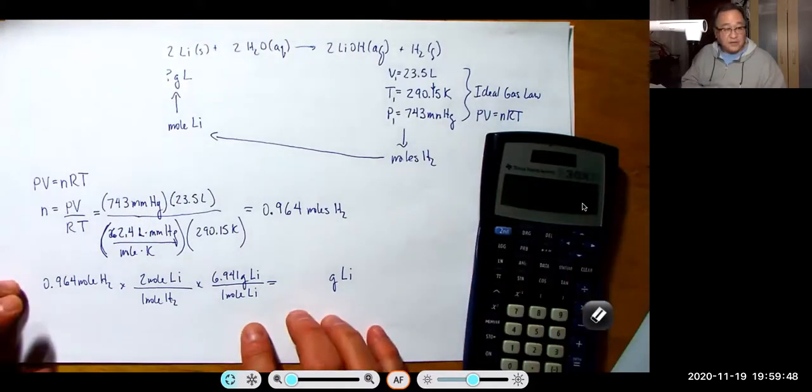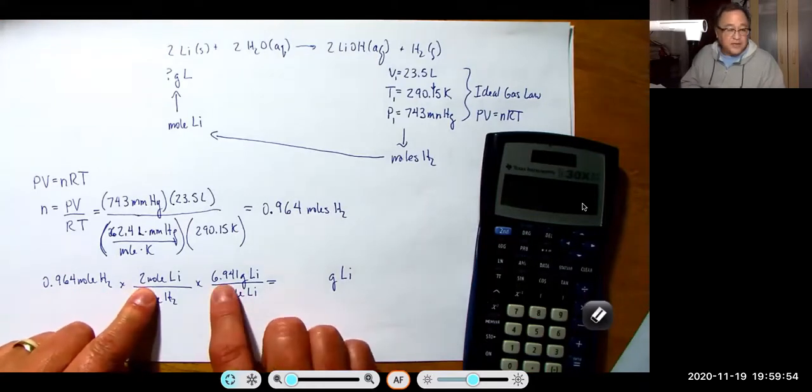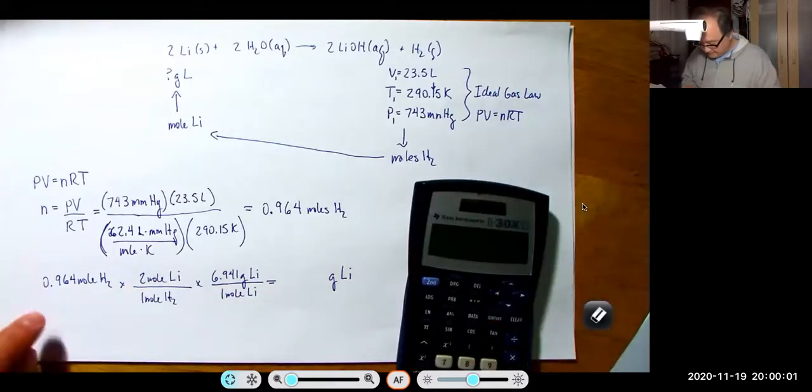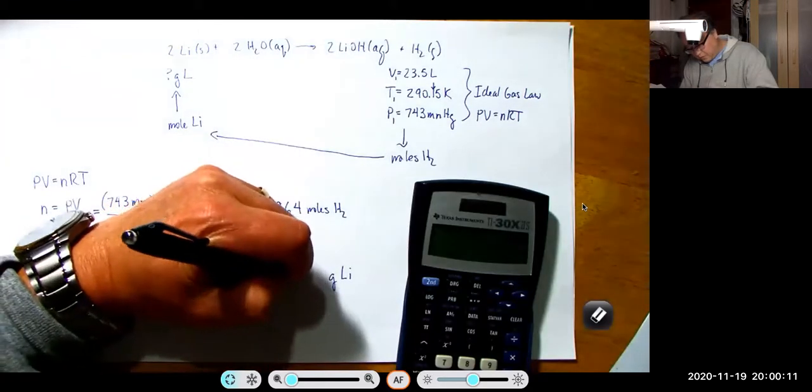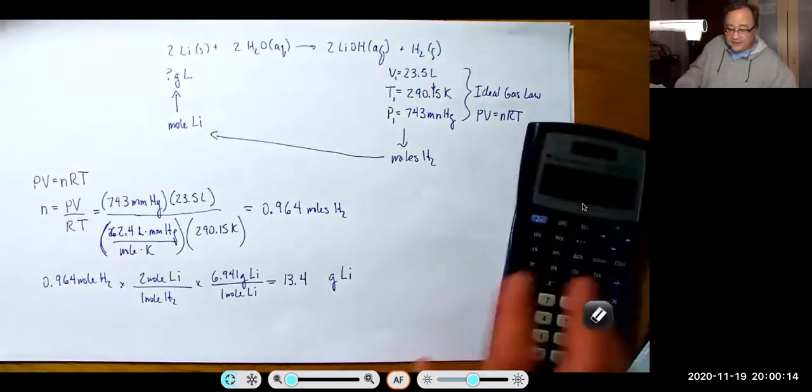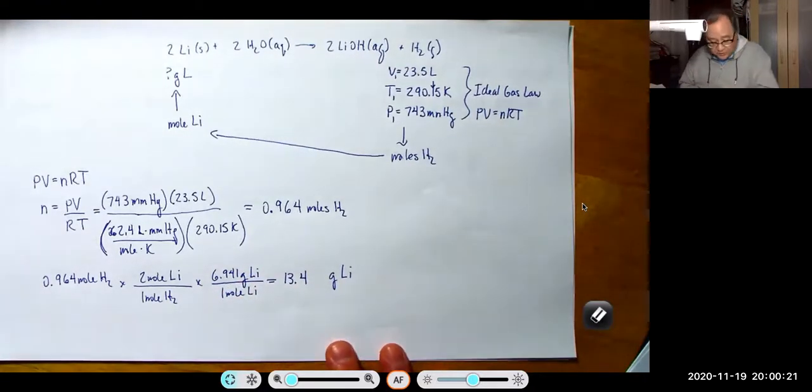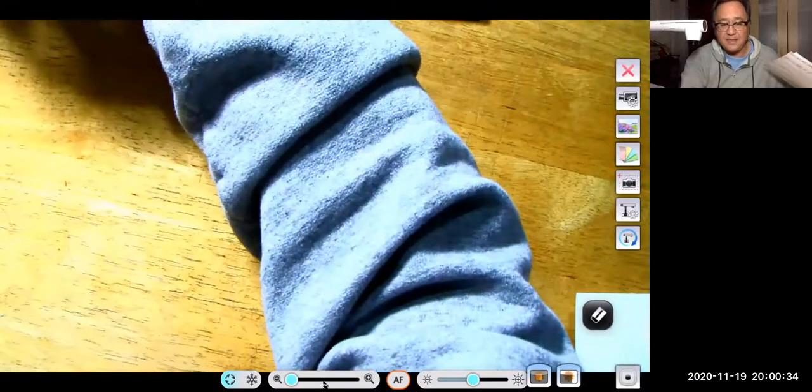Now, estimating this, I think we can all agree that that is pretty close to one. So that times that is two. So two times 6.9 is going to put this close to 14, but a little less. So we'll call it 13 and a half. So let's see what we get. Times two, times 6.941. And we get 13.4 grams of lithium. And that's how you do stoichiometry with gas problems. More than likely, you're going to have to solve for the moles of the gas and then do something over here. Well, that was a pretty short one. Thank you for listening.